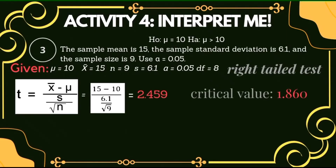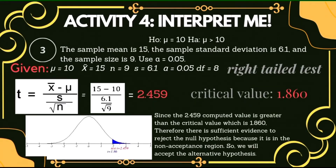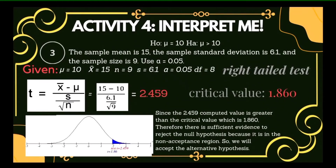We will get a computed value of 2.459 and a critical value of 1.860. Constructing a graphical presentation, the rejection region is found at the right part of the graph with a critical value of 1.860. Since the computed value is lying on the right part of the graph, it is in the rejection region. Therefore, since the 2.459 computed value is greater than the critical value of 1.860, there is sufficient evidence to reject the null hypothesis, and we will support the alternative hypothesis.